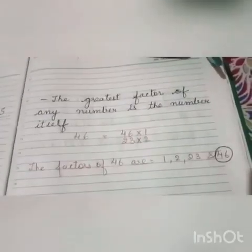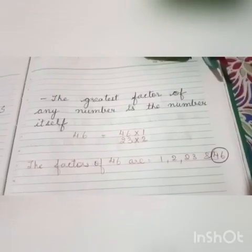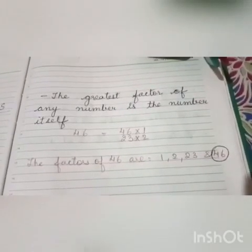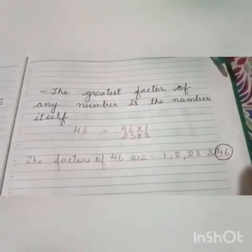Children, here you can see that 46 ones are 46 and 23, 2's are 46. So the factors of 46 are 1, 2, 23 and 46.